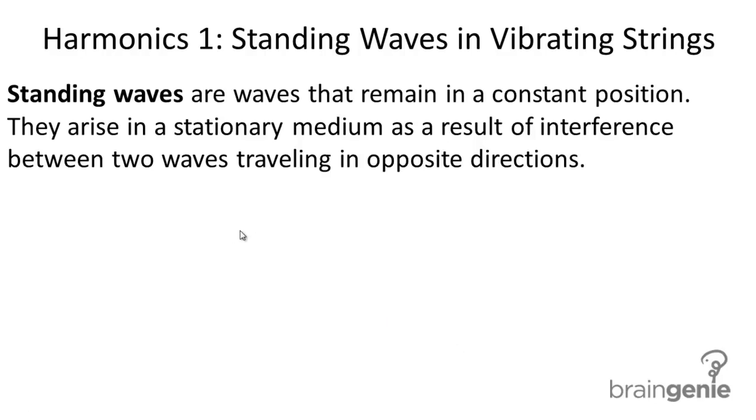Harmonics 1: Standing waves and vibrating strings. Standing waves are waves that remain in a constant position. They arise in a stationary medium as a result of interference between two waves traveling in opposite directions.